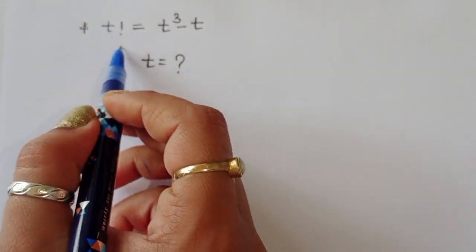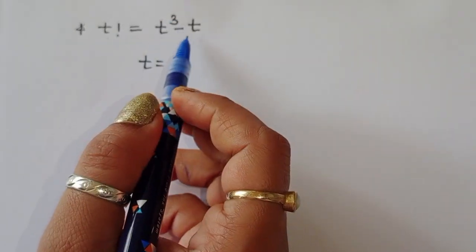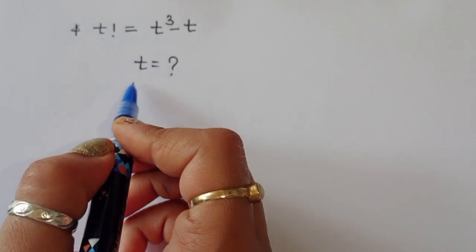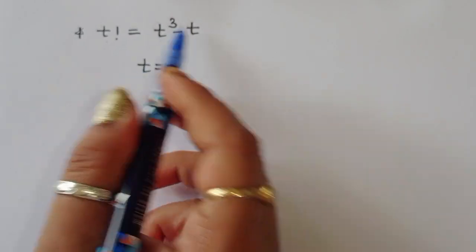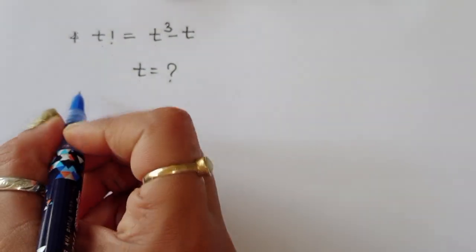The question is: factorial of t is equal to t cubed minus t. We have to find out the value of t. Let's see the solution.